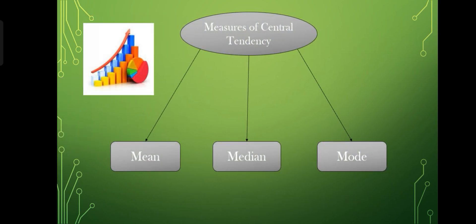There are three types of central tendency: mean, median, and mode. Firstly, we will see mean.